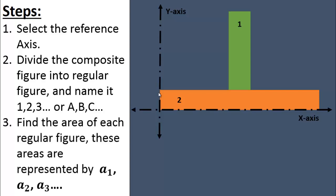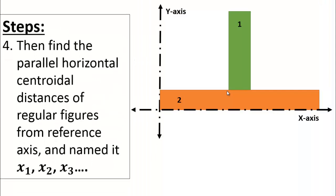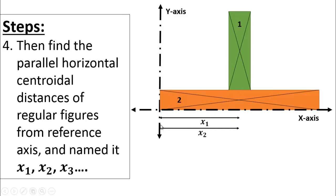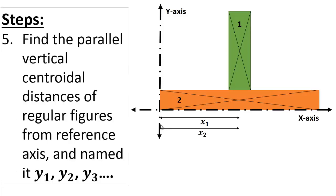Step 3 is to find the area of each regular figure. These areas are represented by A1, A2, A3, and so on. Step 4 is to find the horizontal centroidal distance of each regular figure from the reference axis, named x1, x2, x3. The reference axis for horizontal distance is the Y-axis. Step 5 is to find the vertical centroidal distance of each regular figure from the reference axis — the X-axis — represented by y1 and y2.